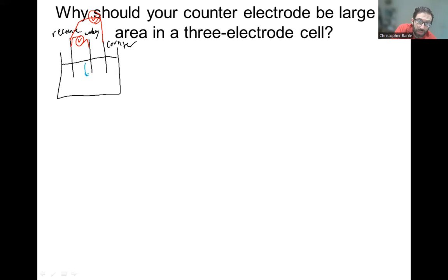So for every electron that the working electrode gains in the case of reduction, the counter electrode is going to be losing that. And so we have to balance it, right? Oxidation has to be balanced by reduction and vice versa.